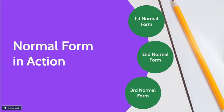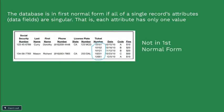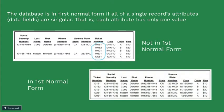The normal form in action. The database is in First Normal Form if all single record attributes are singular — that is, each attribute has only one value. This table shown is not in First Normal Form because the ticket number is a multi-valued attribute. If we fix this, all ticket numbers will have a respective record, and that fixes the First Normal Form.